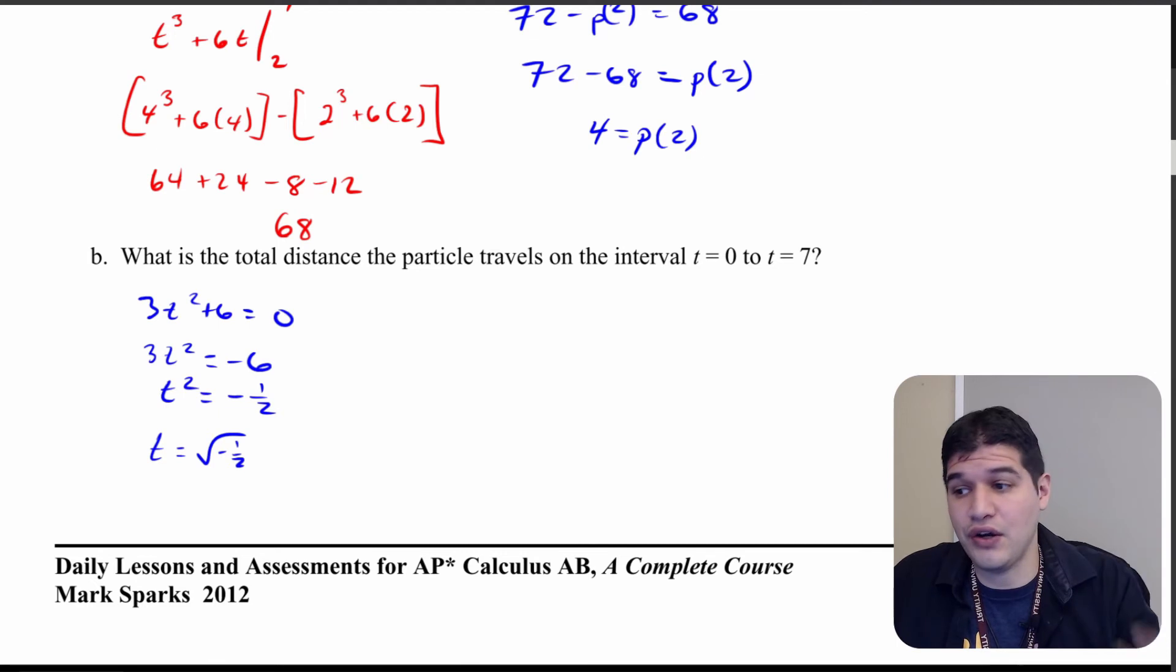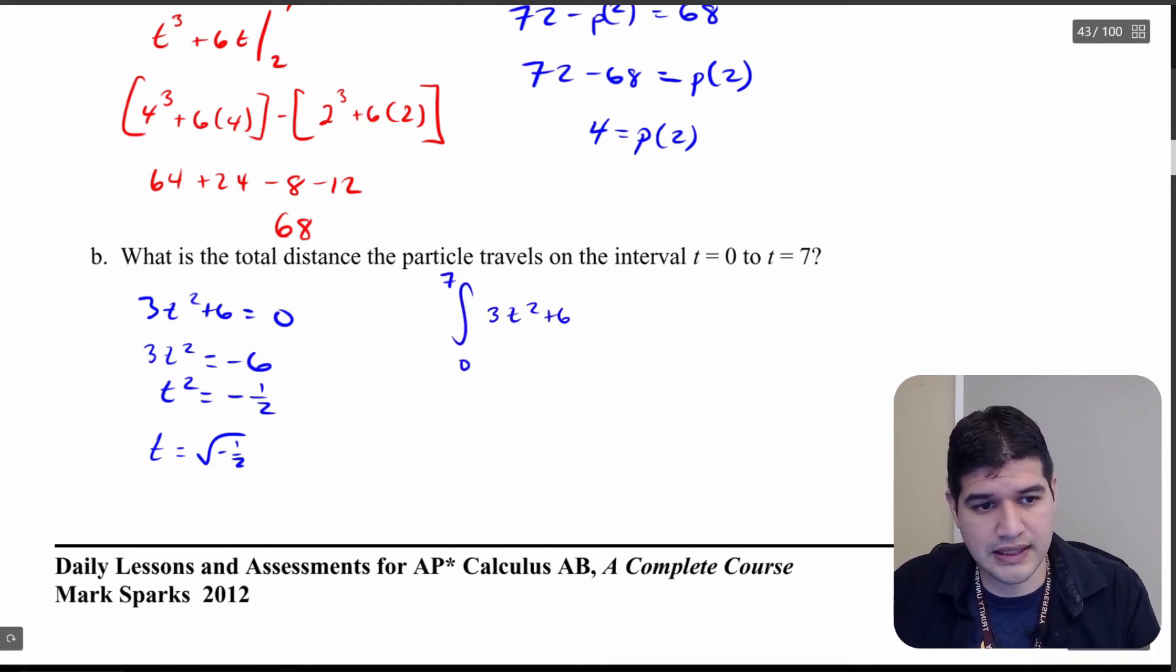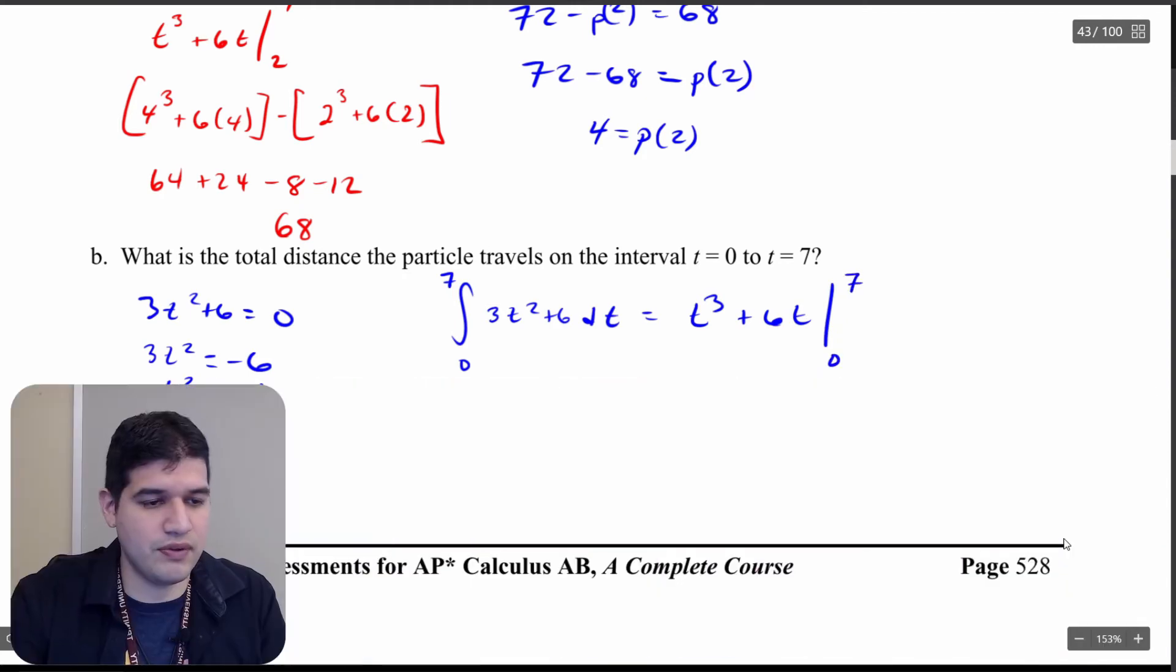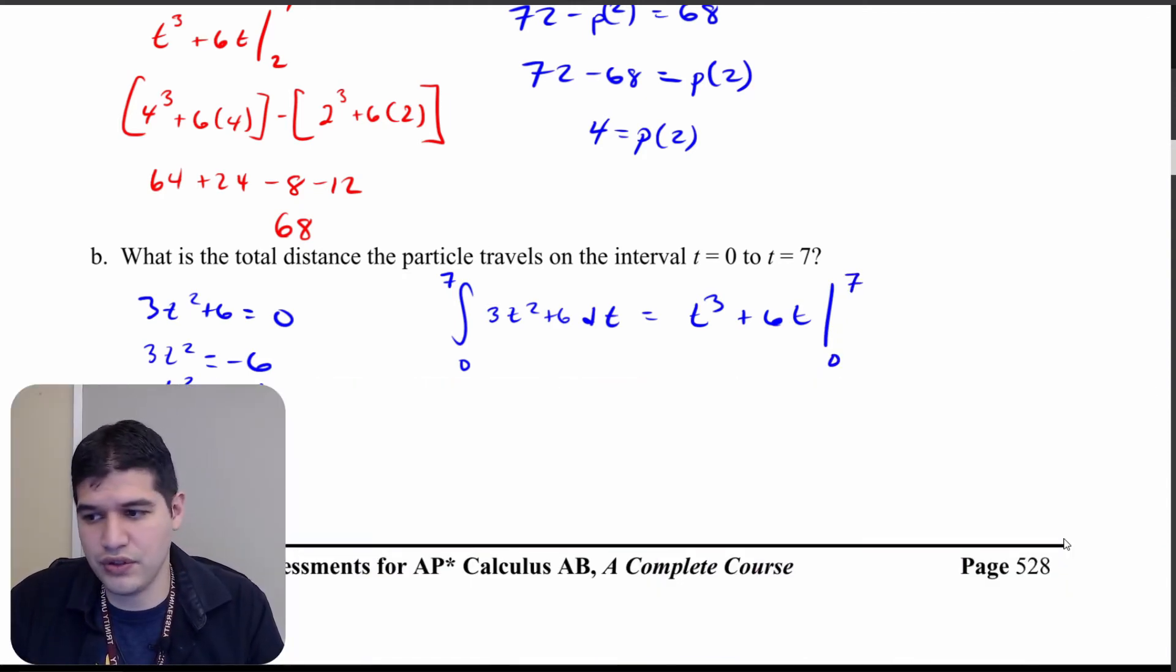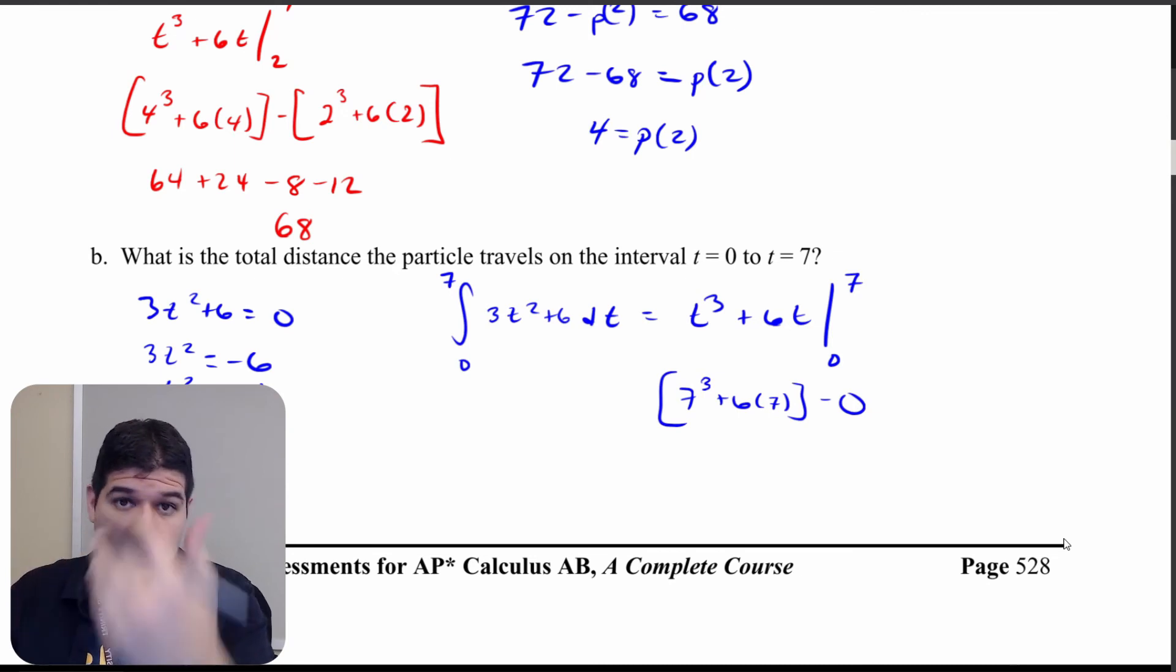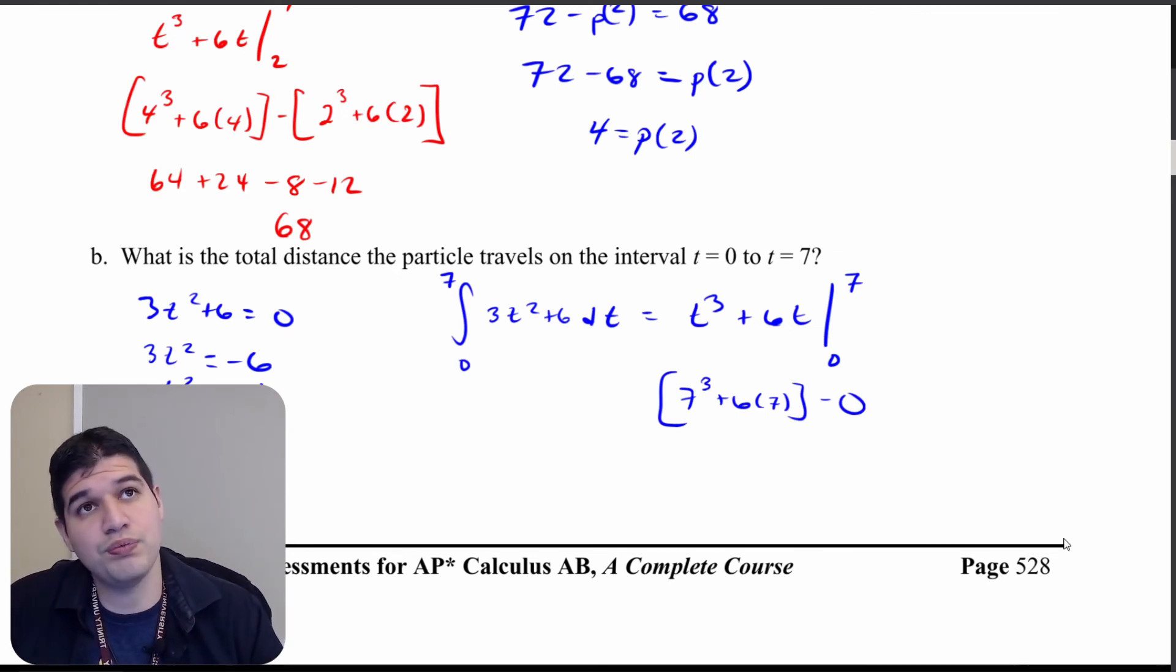So all I need to do is calculate this integral from 0 to 7. 3t squared plus 6 dt which is going to be t cubed plus 6t. We're evaluating this from 0 to 7 now. And then from here 7 to the third power plus 6 times 7. Of course all that's going to be minus 0 because when I substitute 0 in, 0 cubed plus 6 times 0 that's all 0.